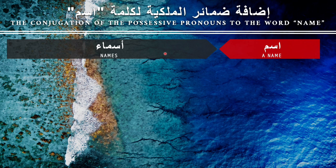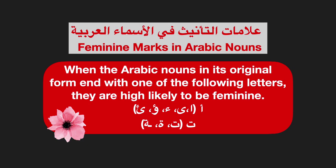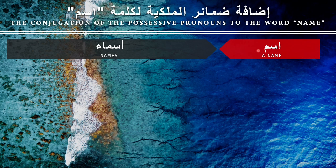Knowing this will make the flow easier as you learn the language more and build up your vocabulary. A tip: if you don't know or you forgot whether a word is masculine or feminine, just look at the end of it without any suffixes. If it ends with alif, hamza, or ta — either ta maftuha or ta marbuta — it is most likely feminine. In the case of 'ism,' we end with meem in the singular format, so it is most likely masculine.